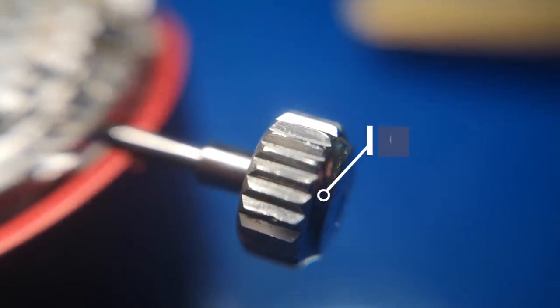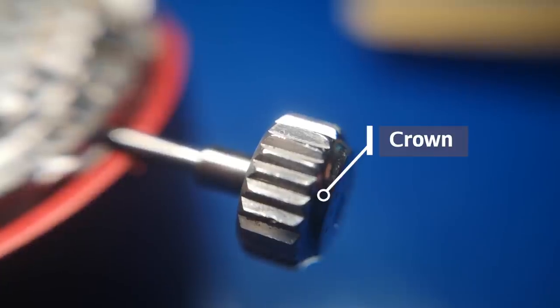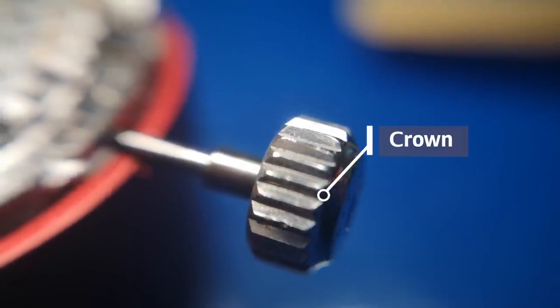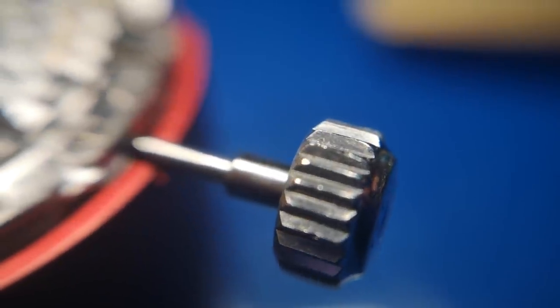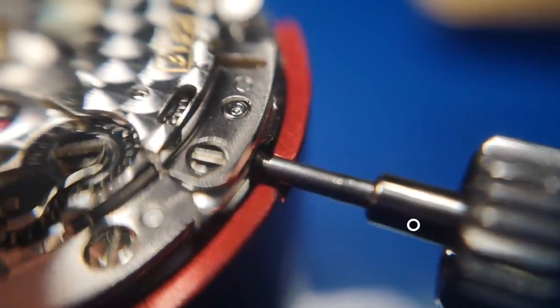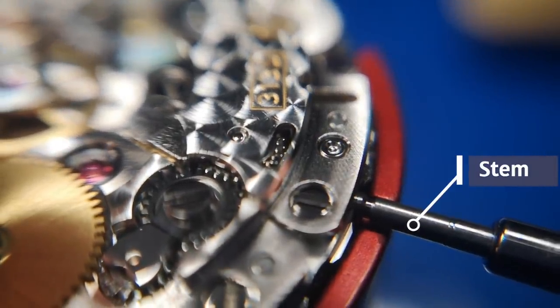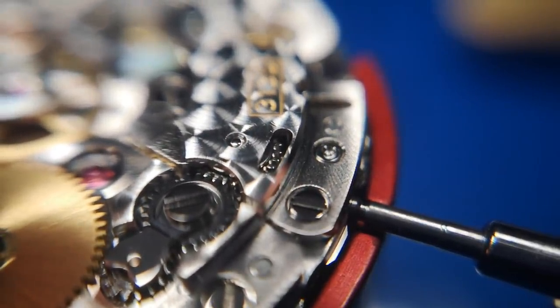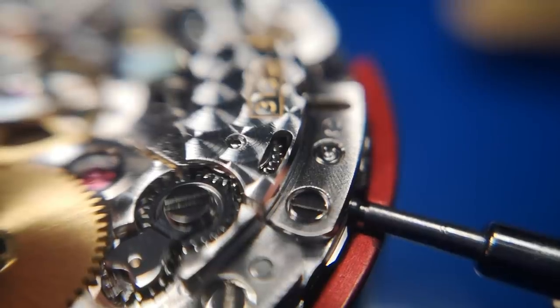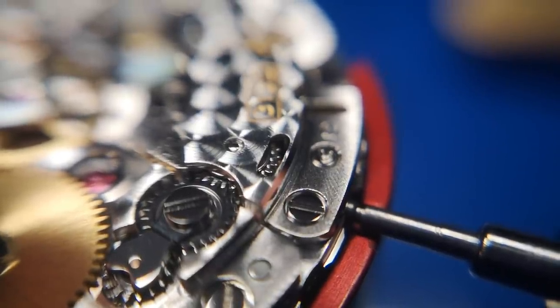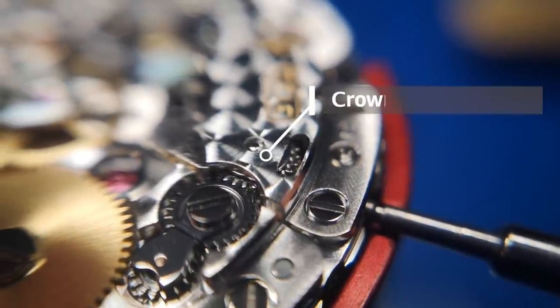Just focusing then for a moment on the way in which the powertrain works. We start with the stem here and the crown, and as we turn that, it turns the winding pinion which is being pushed back against by the clutch in the winding position, which in turn turns the crown wheel in the center of the frame there.